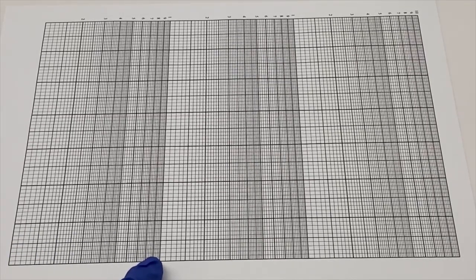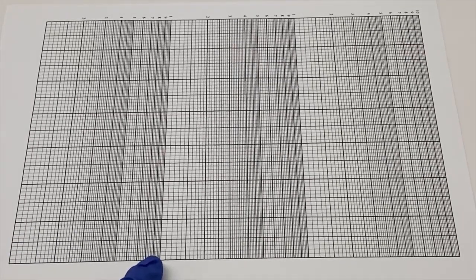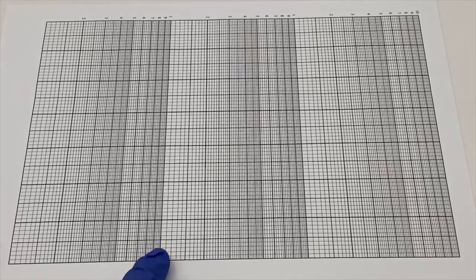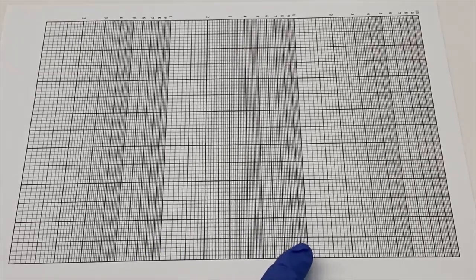The next cycle increases in increments of 10, meaning that it starts from 10 and goes all the way up to 100 here.